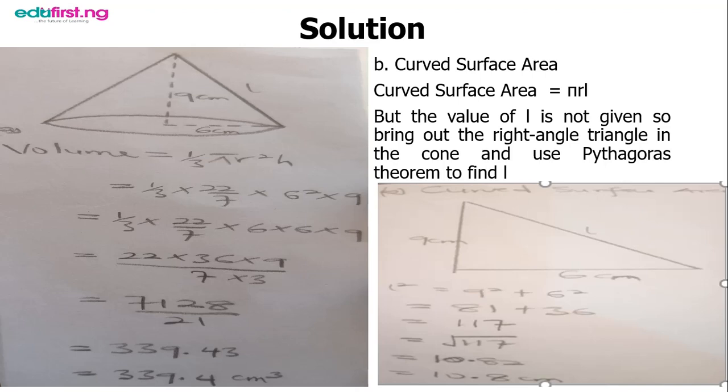What we are not given is the slanted height, l. Now we are going to start with the first calculation, which is the volume.